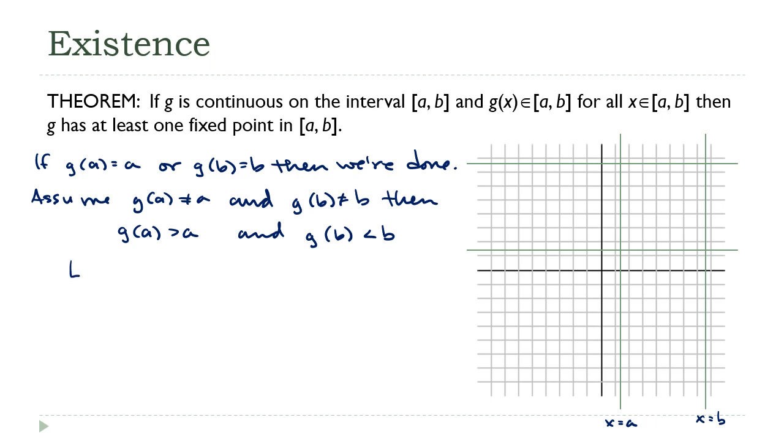All right so I'm going to define a new function then. Let h of x equal g of x minus x. The first thing I want you to notice here is that h is continuous because it's the difference of two continuous functions. I also want you to notice that h of a equals g of a minus a, but because g of a is bigger than a, that's greater than zero. Also h of b equals g of b minus b, and this time it's the other way around. g of b is smaller than b, so this is less than zero.